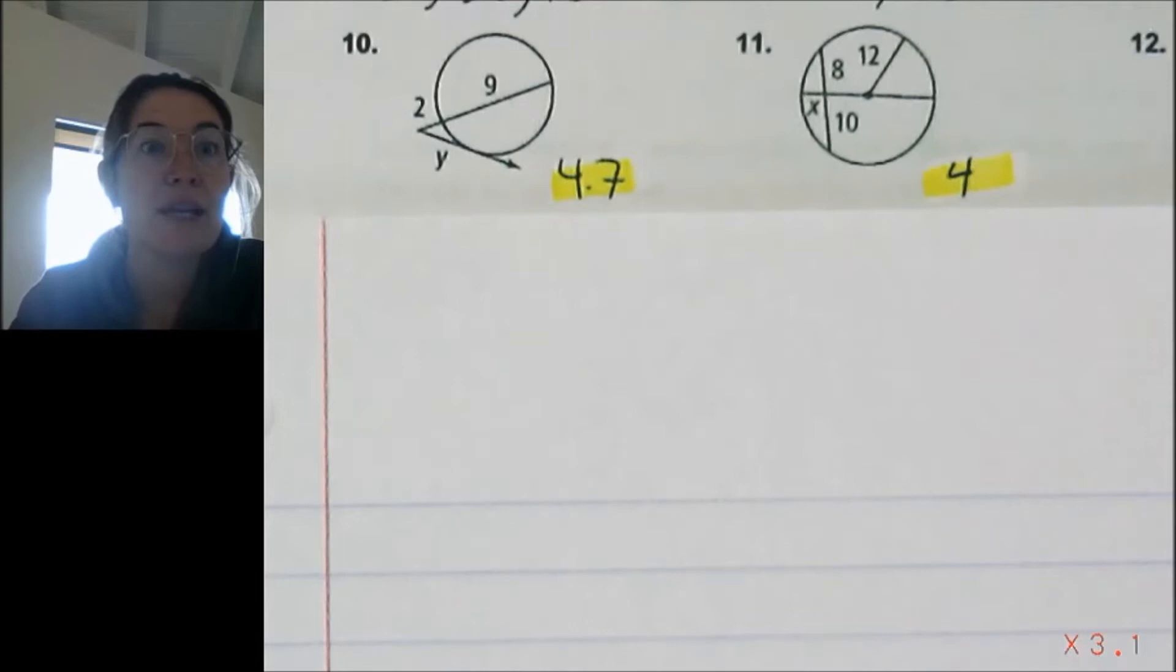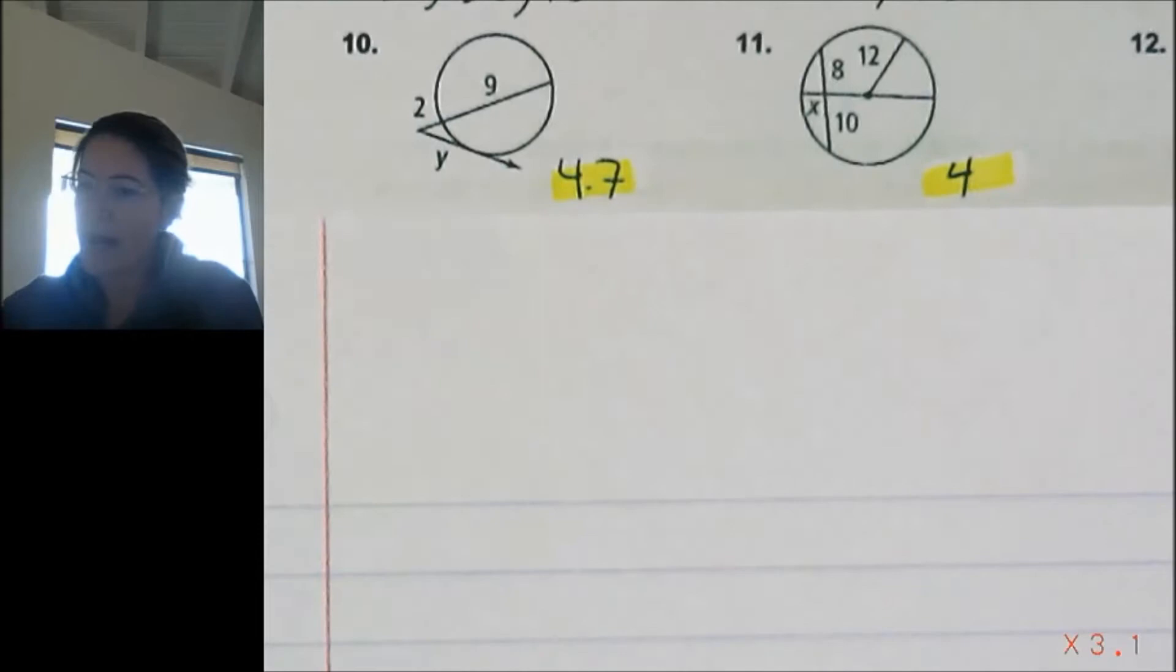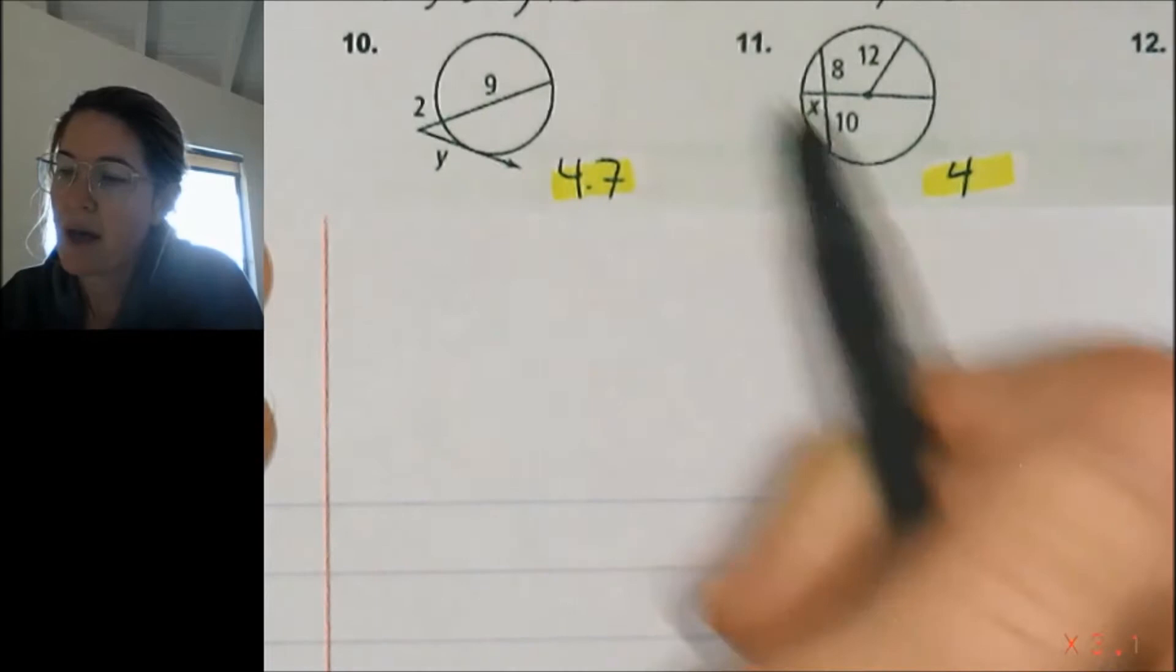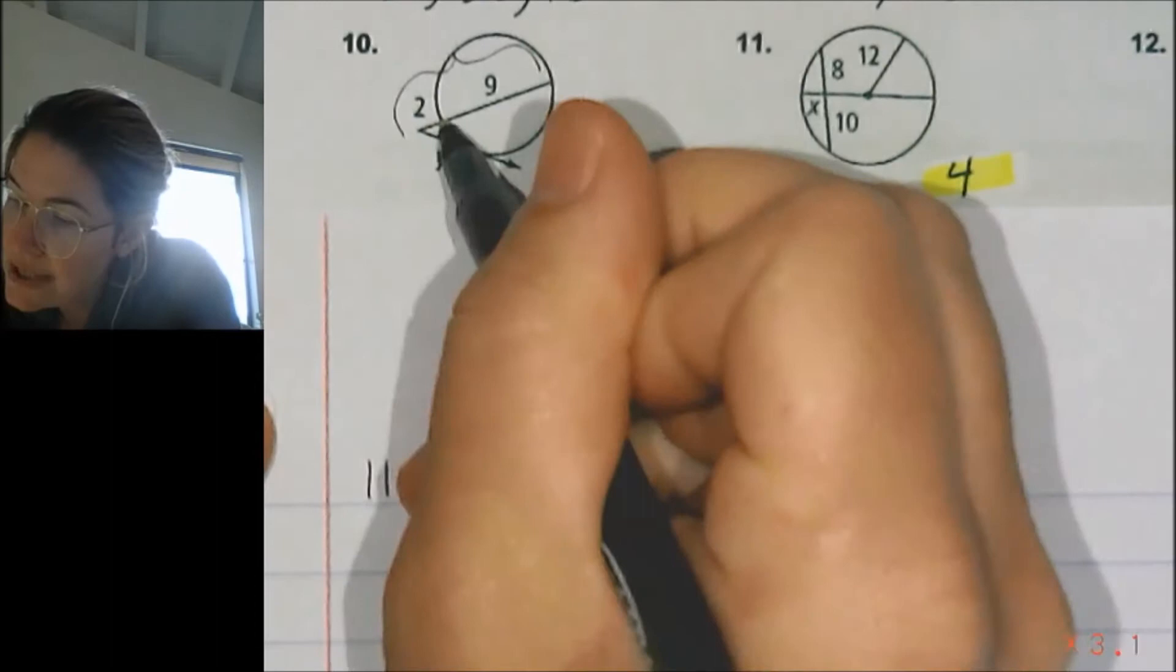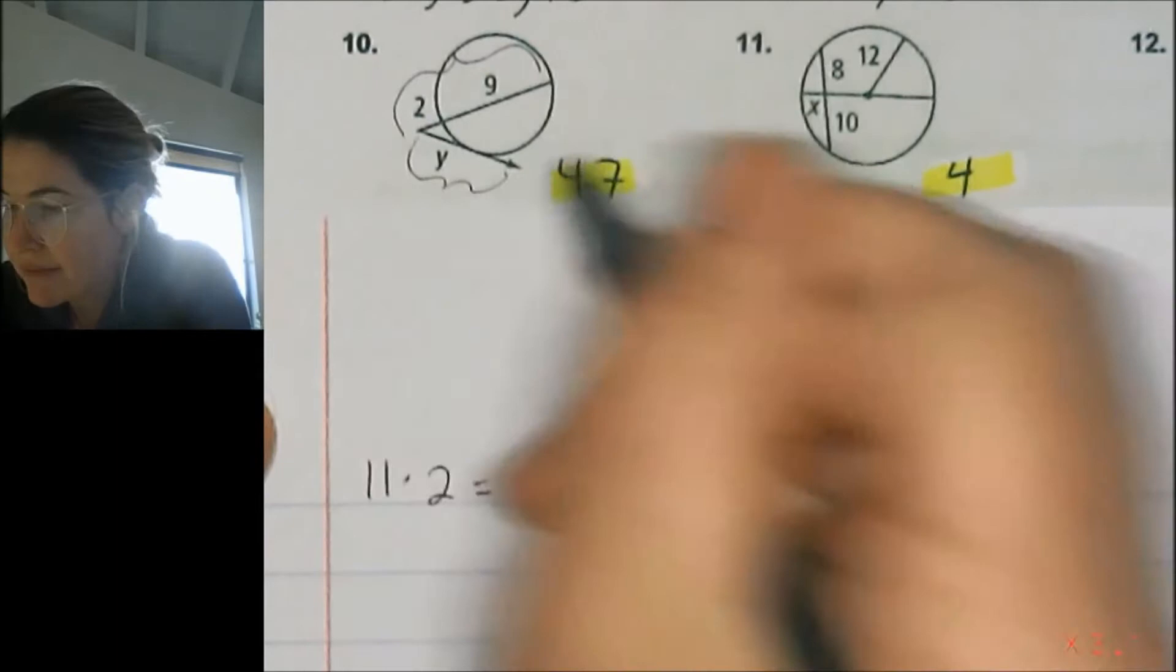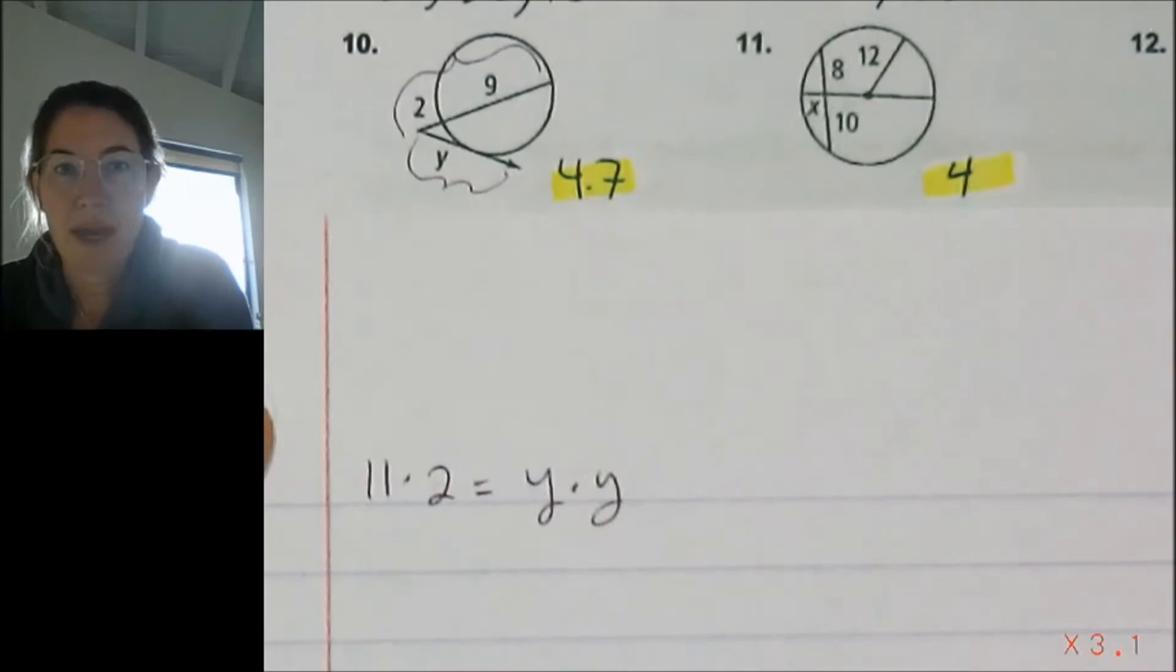Okay, number 10. This one is finally using our segment theorems. If we have two guys intersecting outside, it'll be different than inside. Outside is the whole secant segment, which is 11, times the external secant segment, 2, is equal to the whole secant segment, in this case y, times the external part, y. And that's it.